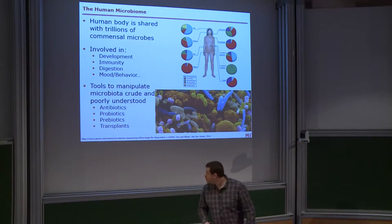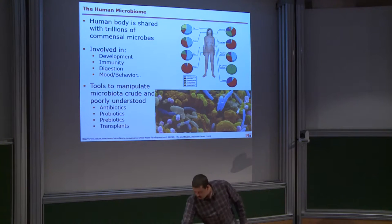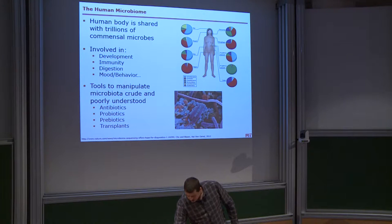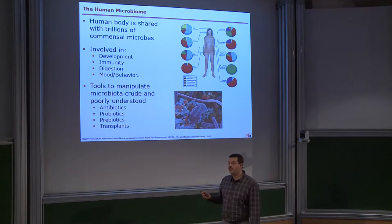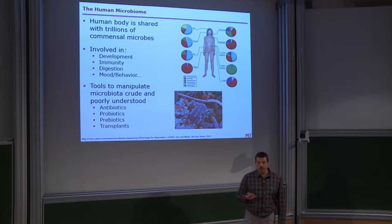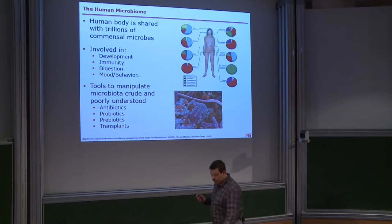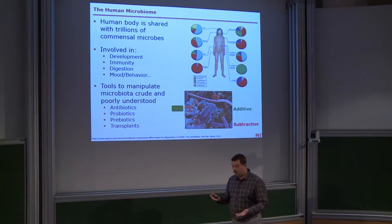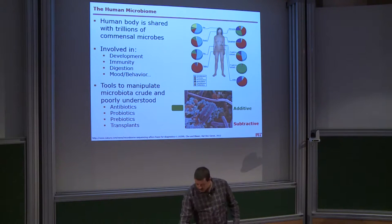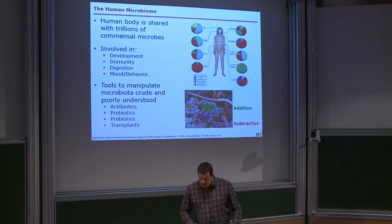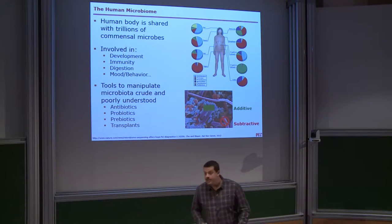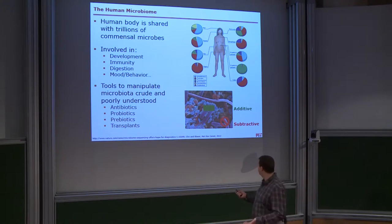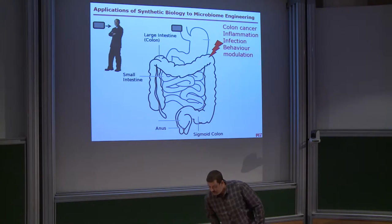So, transplant — change the microbiome with something completely different which may or may not be healthy. What we want to do is have a much more delicate approach to microbiome engineering: either selectively add a bug with predetermined functionalities to an existing microbiome, or possibly remove a bug involved in a pathogenic situation. This requires tools that do not exist as of now.